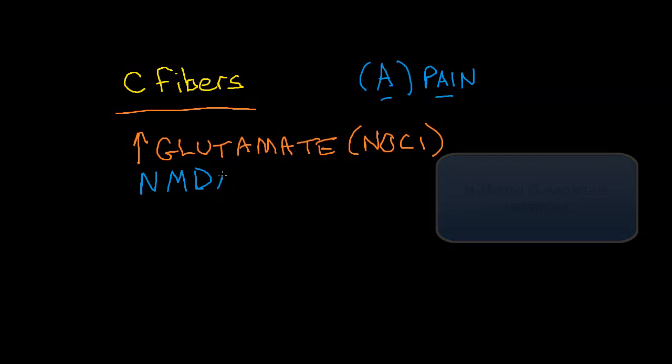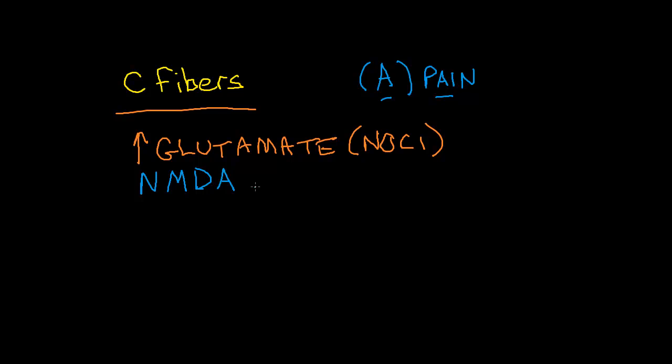These NMDA receptors are designed to pick up glutamate, so more of these receptors present in the dorsal horn also lends to increased nociceptive processing at the level of the dorsal horn.